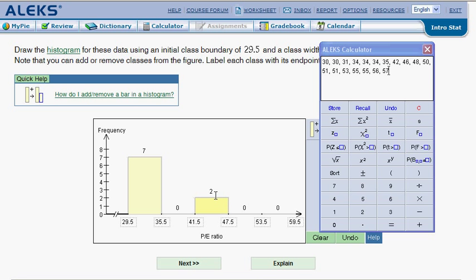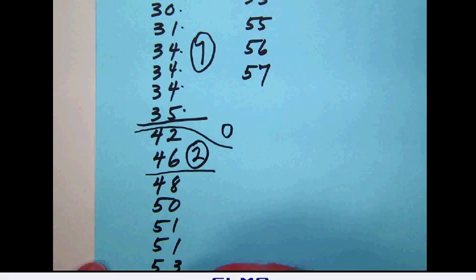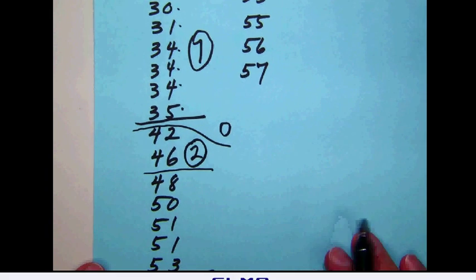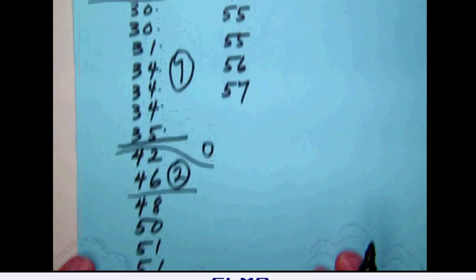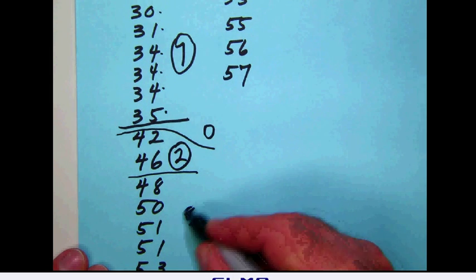Now the next bar is going to go from 47.5 to 53.5. So we're going to cut off here at 53.5. And we will notice here then that we have 1, 2, 3, 4, 5 values in there. Let's go up then and back to our graph.